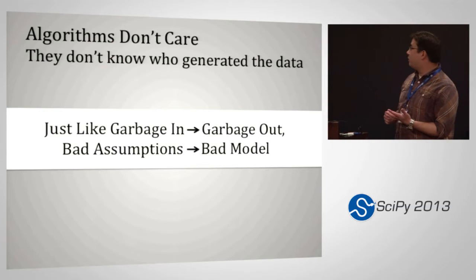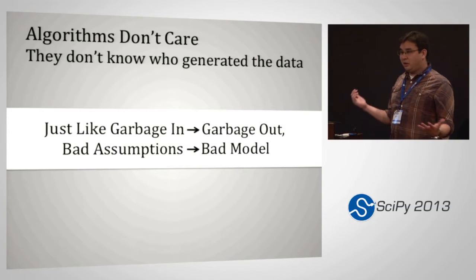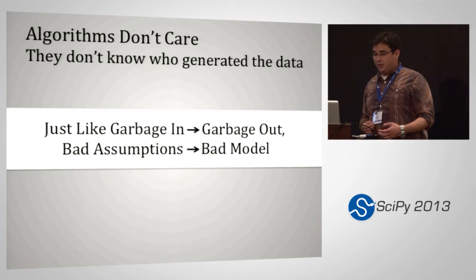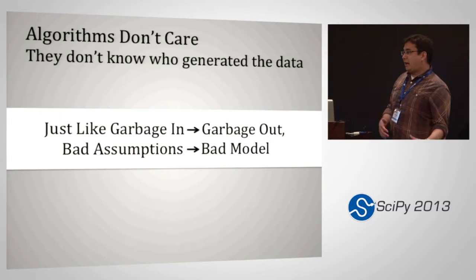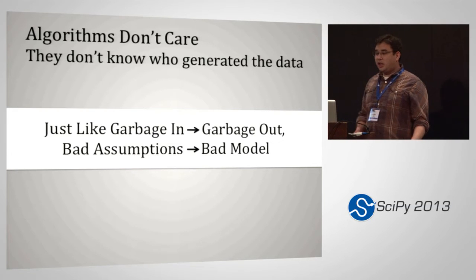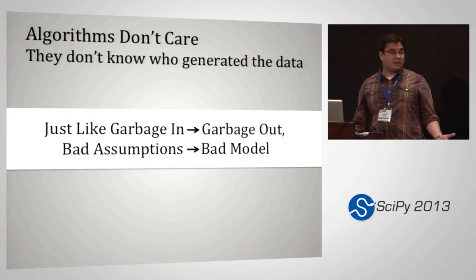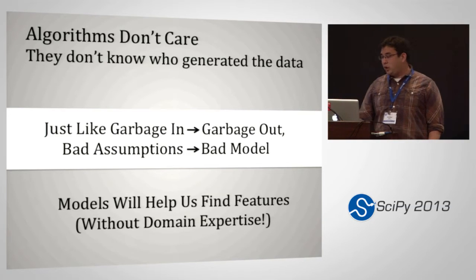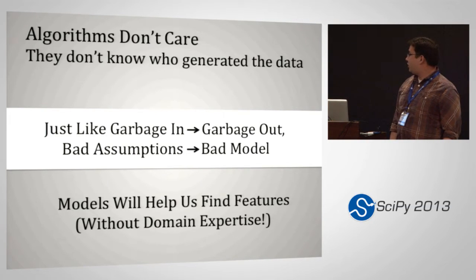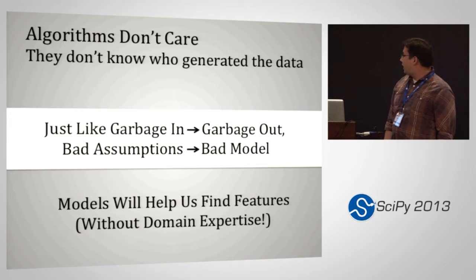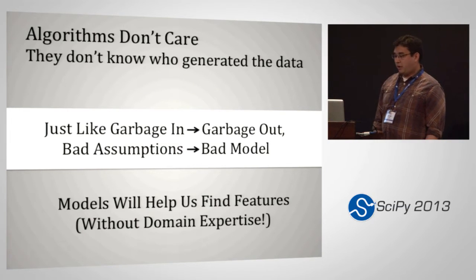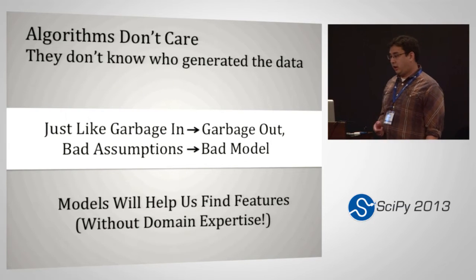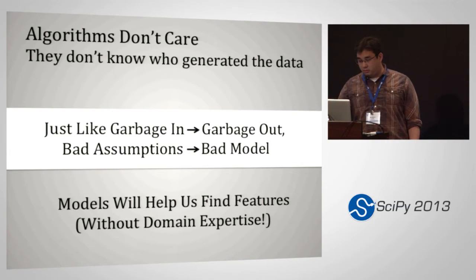But I think algorithms don't care — and this is what I mean by data agnosticism. Algorithms take data in; they don't care where it comes from. They pretty much care about one thing: give me good data and I'll give you good output. Garbage in, garbage out, and bad assumptions lead to a bad model. But we can use models to help us find features without domain expertise — start with a bad assumption, see how we fail, and iteratively figure out how to make better models.